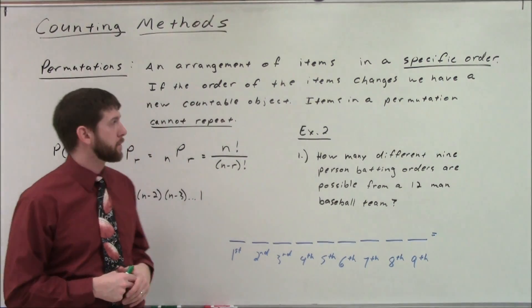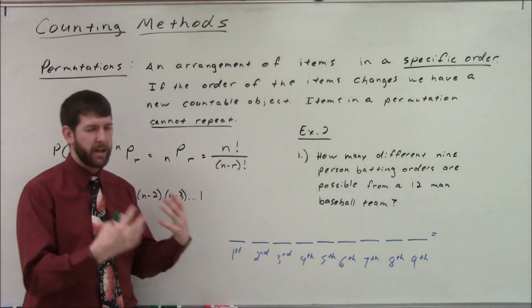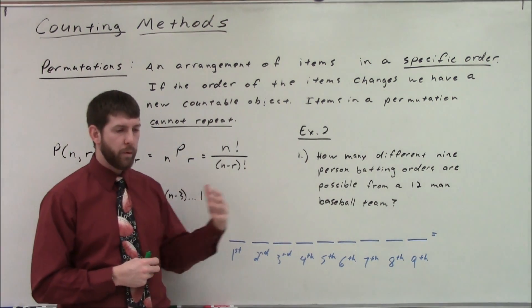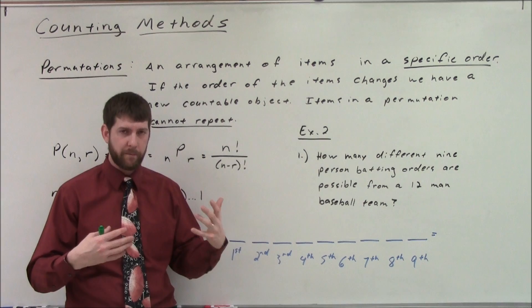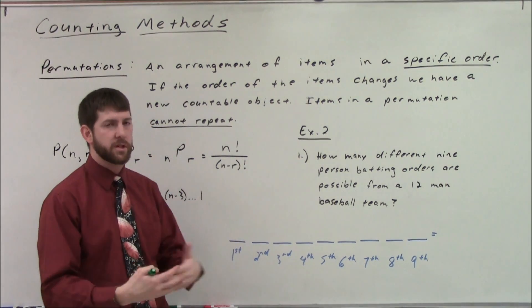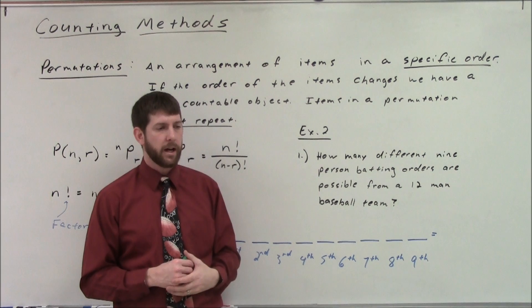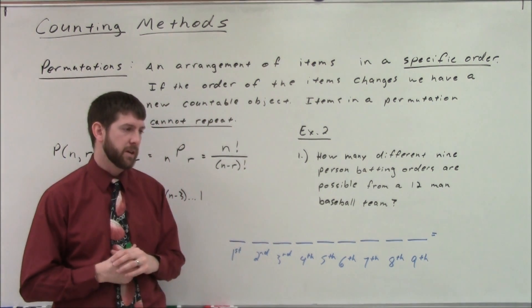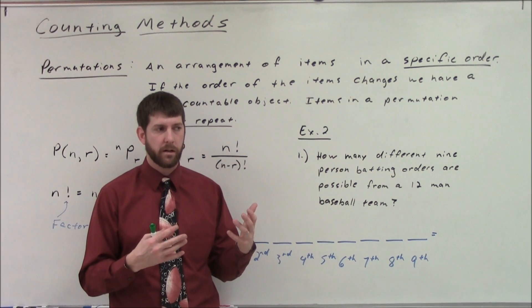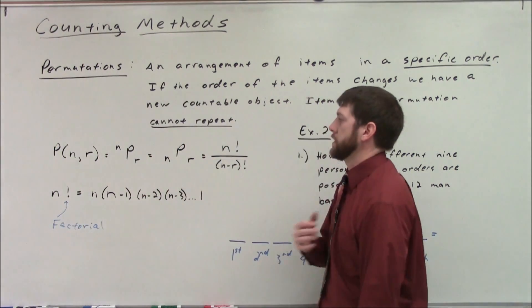Here we have a twist on that counting principle called a permutation. A permutation is an arrangement of items in a specific order. When calculating permutations, if the order of the items changes, we have a new countable object. Items in a permutation also cannot repeat — you obviously can't wear the same tie twice at the same time.